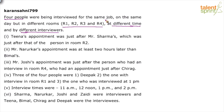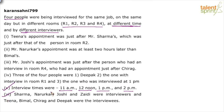There are six clue points. Point one: Tina's appointment was just after Mr. Sharma's, which was just after the person in room two. Point two: Mr. Narurka's appointment was at least two hours later than Bimal's. Point three: Mr. Joshi's appointment was just after the person in room R4, who had an appointment just after Chirag. Point four: Three of the four people were Deepak, the one in room one, and the one interviewed at 1 p.m. Interview times were 11 a.m., 12 noon, 1 p.m., and 2 p.m. Sharma, Narurka, Joshi, and Zaidhi were the interviewers; Tina, Bimal, Chirag, and Deepak were the interviewees.